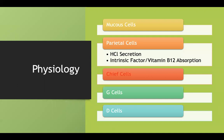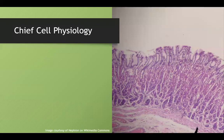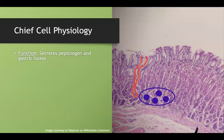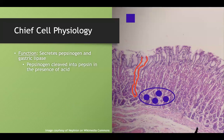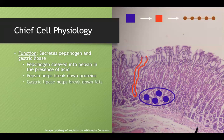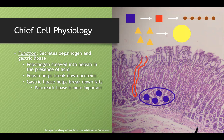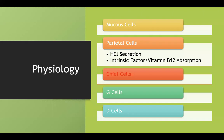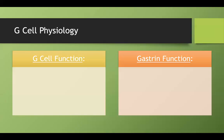Chief cells are in the lower glandular layer and secrete through gastric pits. They're CHOMP cells secreting pepsinogen — a zymogen cleaved into active pepsin in the presence of acid, which then digests proteins — and gastric lipase to help break down fats, though pancreatic lipase is more important for fat breakdown.